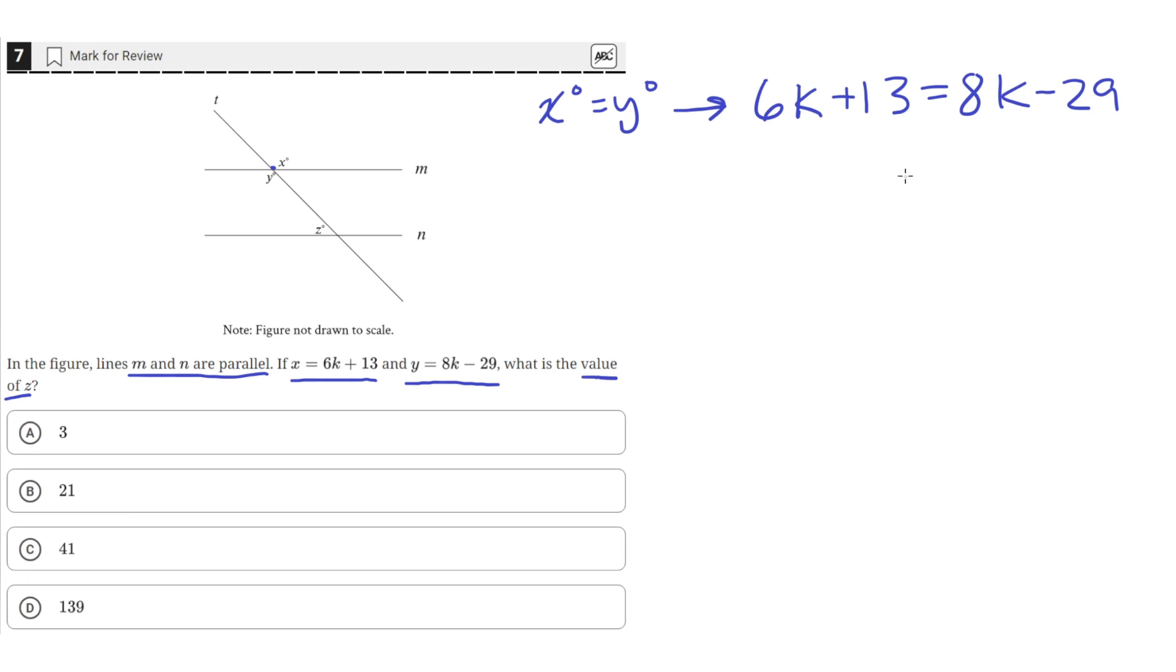So then we can solve for the value of K. We can move this 6K to the other side by subtracting it from both sides, which will give us 13 equals 2K minus 29.